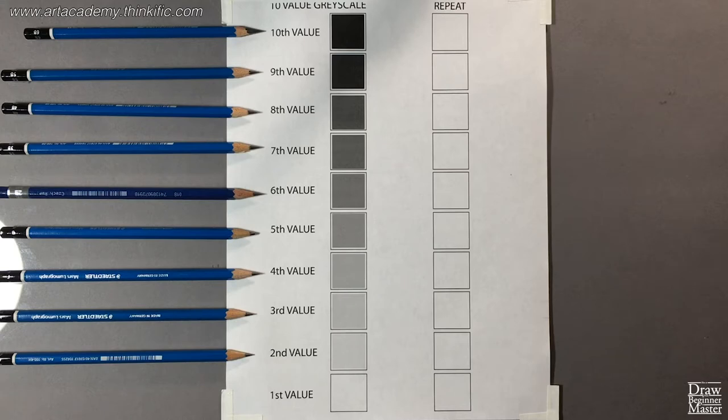For example, if you don't have a 3B, use a 2B. And please follow along even if you're already familiar with the different pencil leads. This lesson is going to play an important role in how I communicate values and pencil leads to you throughout the course.